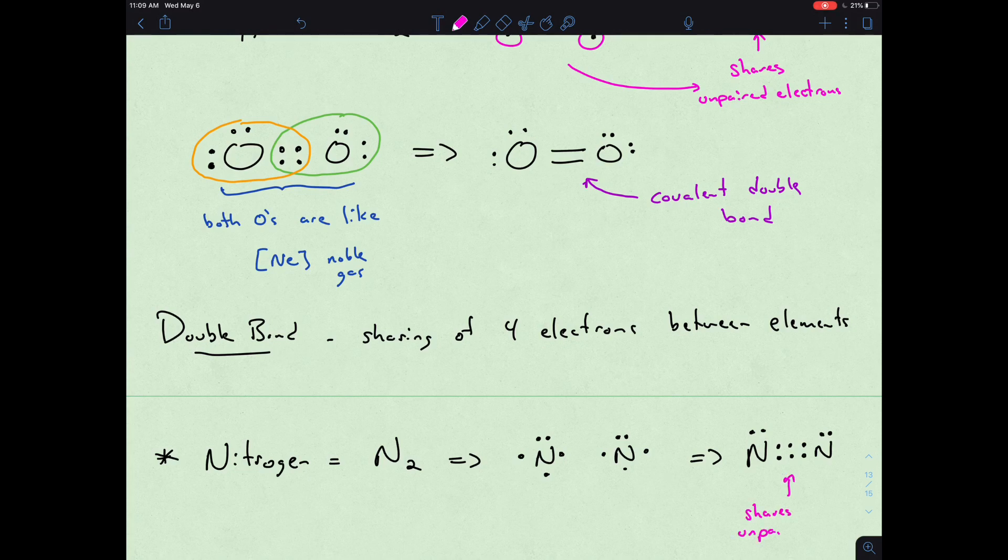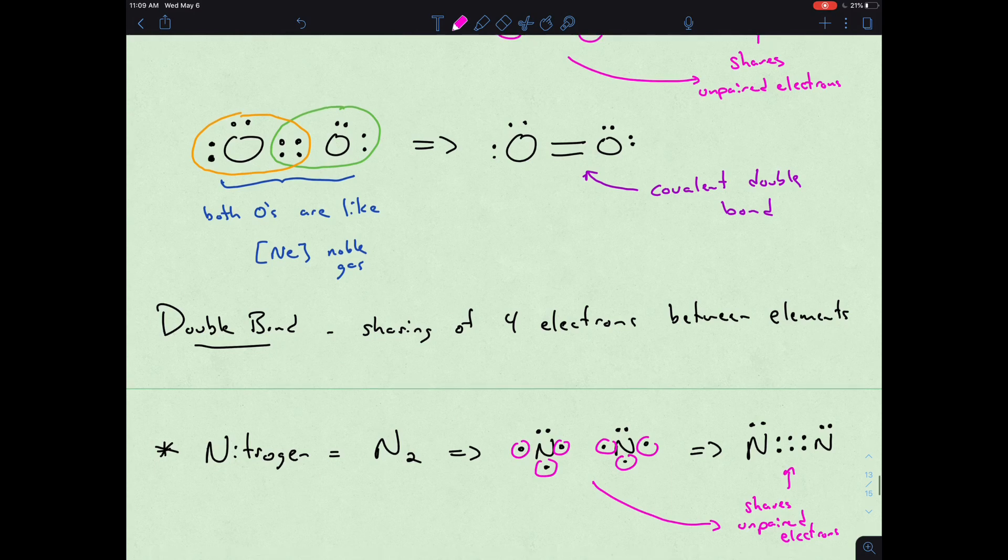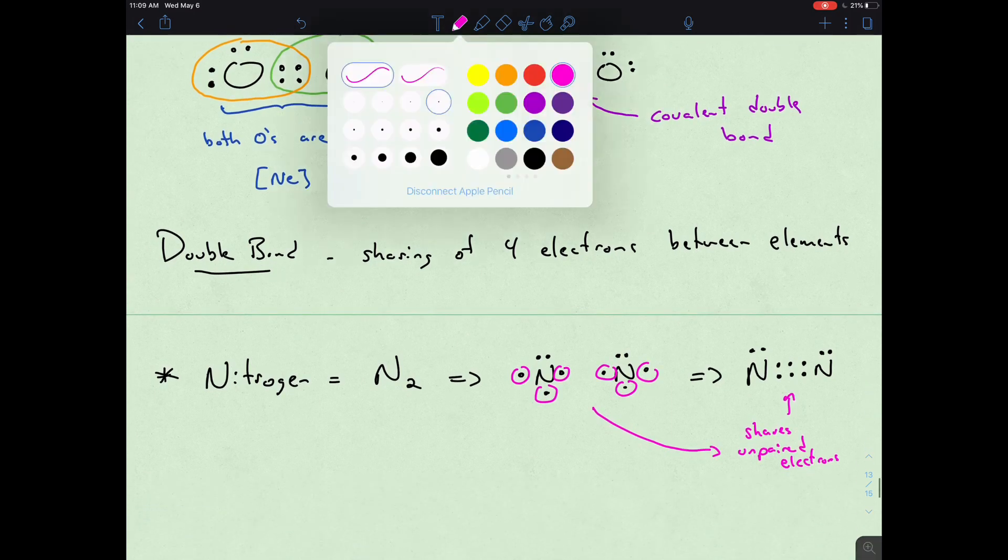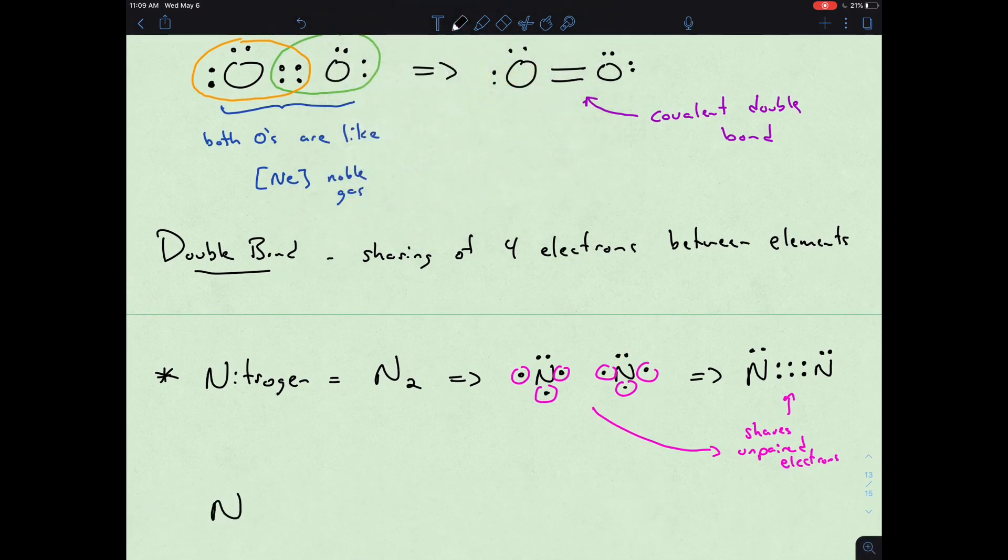We're still sharing the unpaired electrons that you see from our nitrogen monoatomics, and so that leads us to the sharing now of six electrons between the two nitrogen atoms.